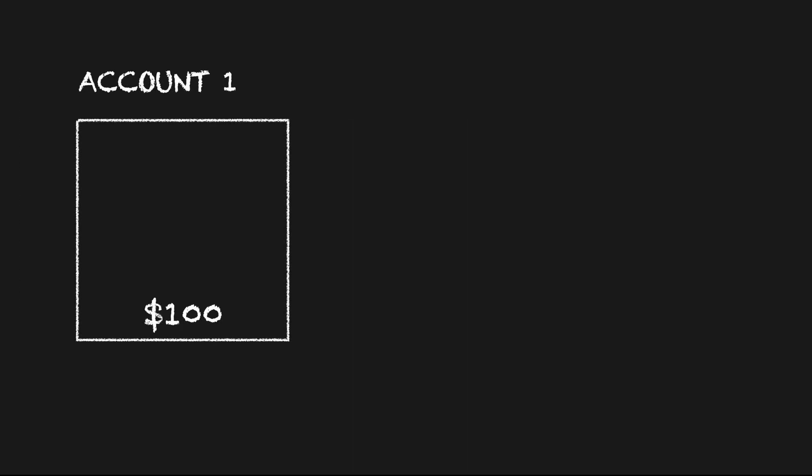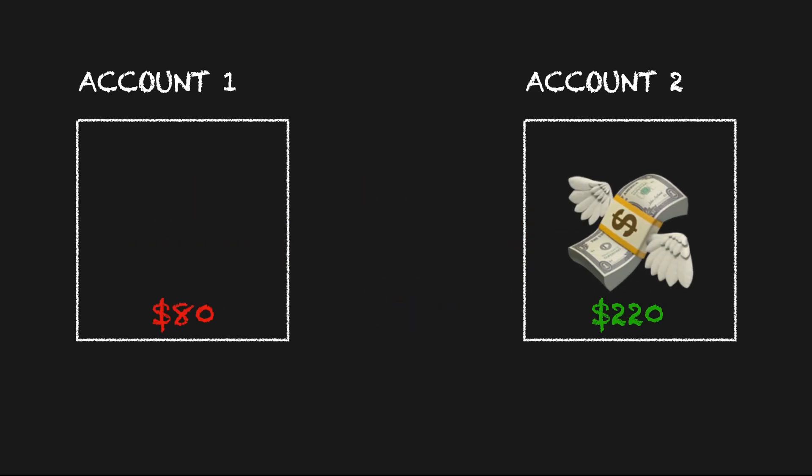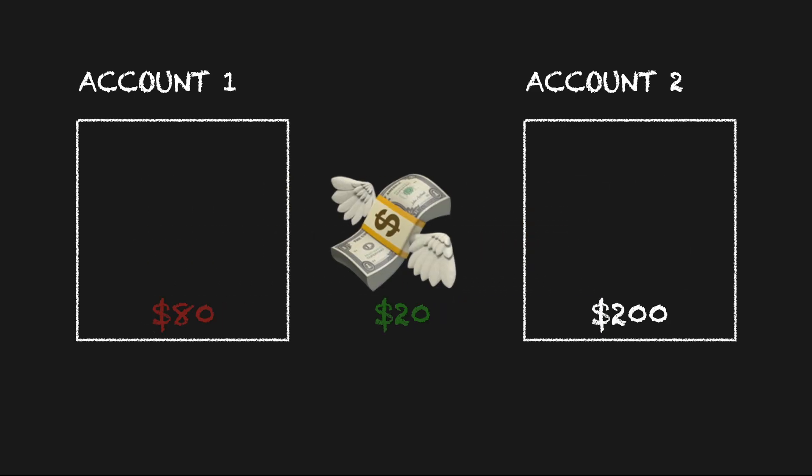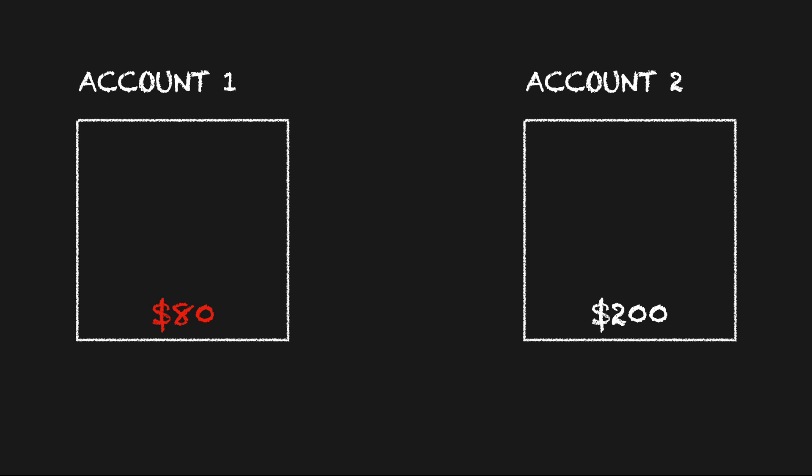The classic example is bank accounts where you want to transfer money from one account to another. This is multiple steps as we need to subtract money from one account and add money to the other. If we take money out of this account and then something unexpected happens to our database, we now have inconsistent data and we've actually lost someone's money. Data loss or corruption is basically the worst possible thing that can happen to the most valuable asset of your company — it's data. So don't do that.